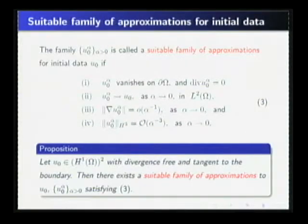Before we state our result, we review the suitable family approximation for initial data. We call the family a suitable family approximation for initial data U0 if it satisfies the four conditions of three. In our result, we prove this proposition that U0 in H1 with divergence-free and tangent to the boundary. Then we construct a suitable family approximation to U0, and the family satisfies three.